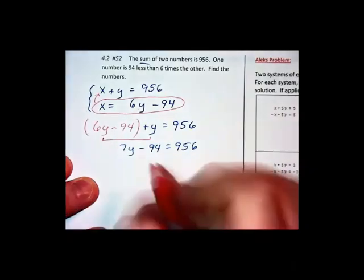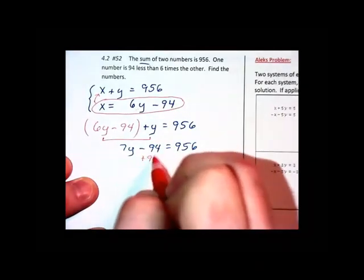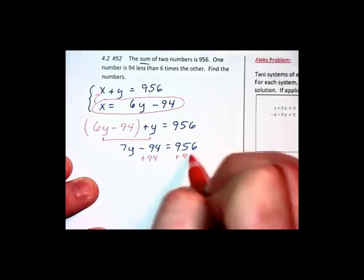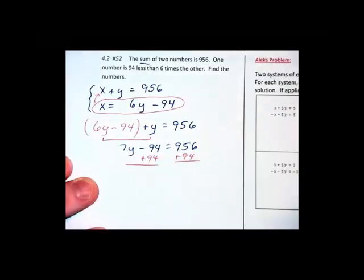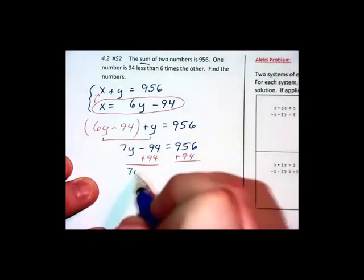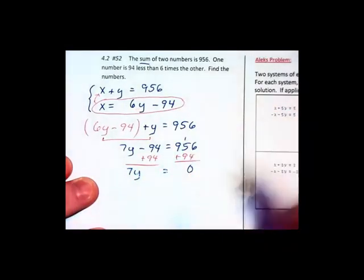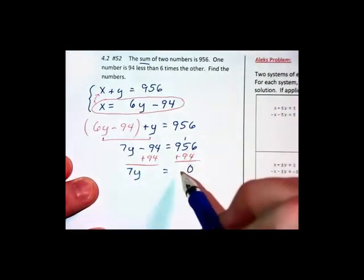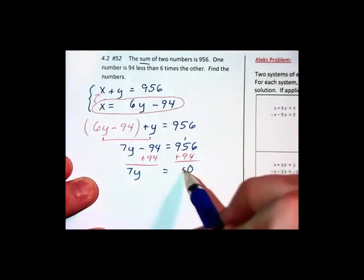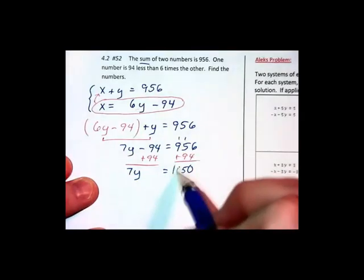We're going to then add 94 to both sides. 7y is all that's left on the left. Then on the right, 10, carry our 1. That gives us 15, carry our 1, 1050.